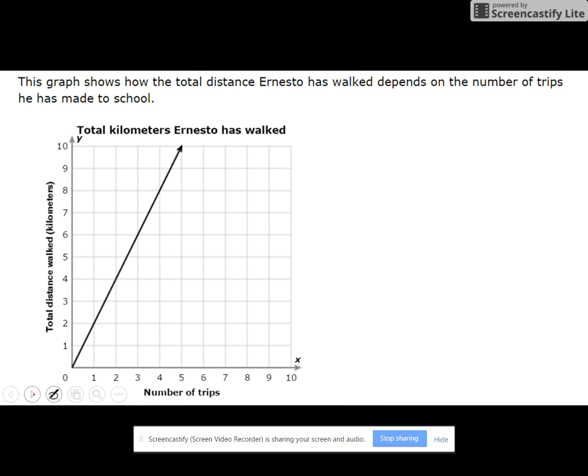The first one talks about the distance that someone has walked and depends on the number of trips they made to school. If you look closely at this graph, you'll notice that it goes straight through zero, which of course means it is constant, and it does have a constant of proportionality.